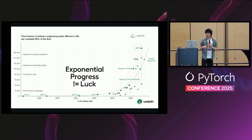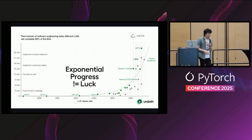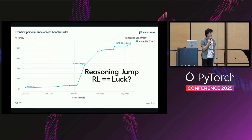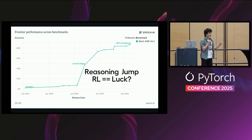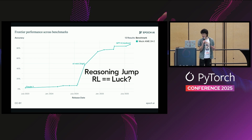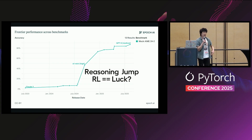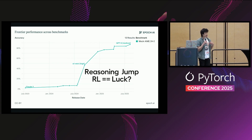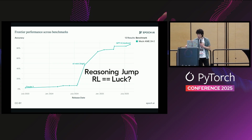There are many schools of thought — some people think it's a sigmoid and will flatten off, some think it's continuous exponential progress. Late last year when OpenAI released o1, it was quite a shock to the world. The performance of benchmarks had kind of flatlined and base models weren't getting better. But then suddenly there was a reasoning jump which increased performance dramatically via reinforcement learning. The question is: was this jump just luck and by chance?